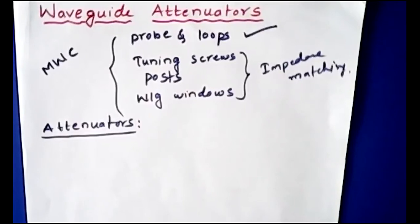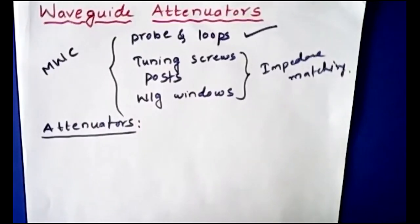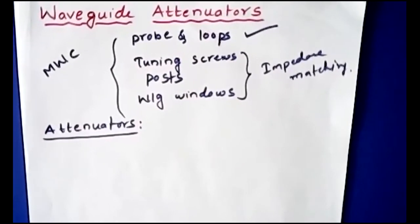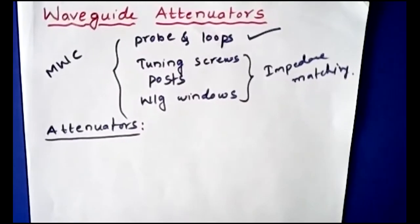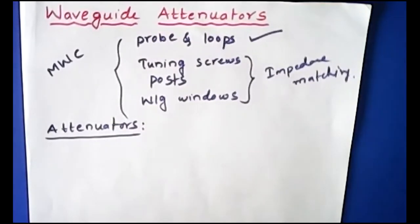What is attenuation first of all? Students have answered: decreasing the strength of signal, reducing amplitude of signal. Good answers. But I want an application — does reducing the amplitude come under an advantage or a disadvantage?